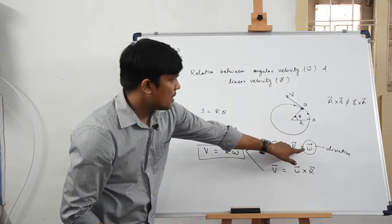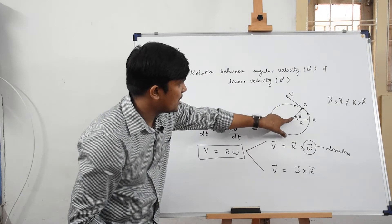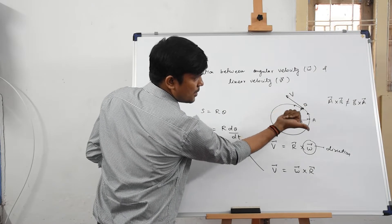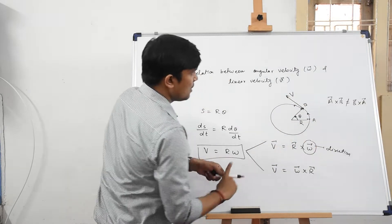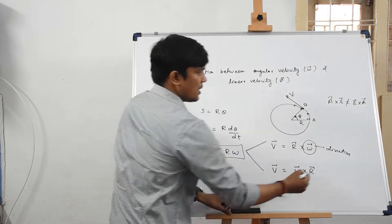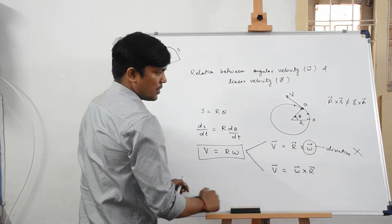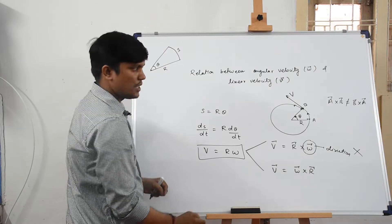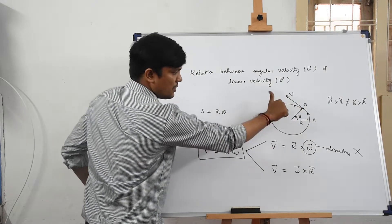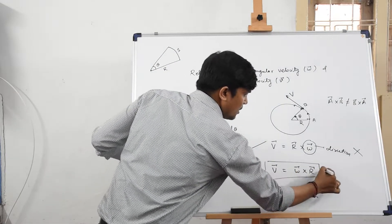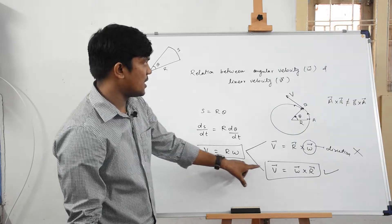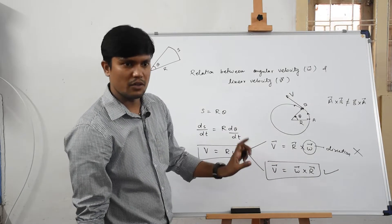So omega is outward. If we take r cross omega, the thumb points in the direction opposite to the velocity, so that relation is wrong. Now for omega cross r: the thumb points in the direction of v, so this relation is correct. Therefore, v vector equals omega vector cross r vector. This is the relation between linear velocity and angular velocity.